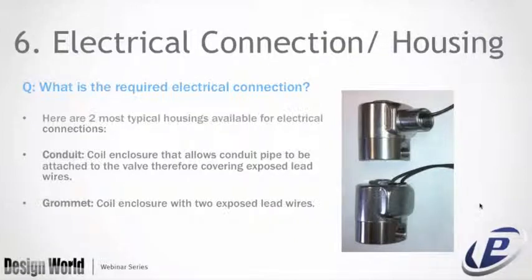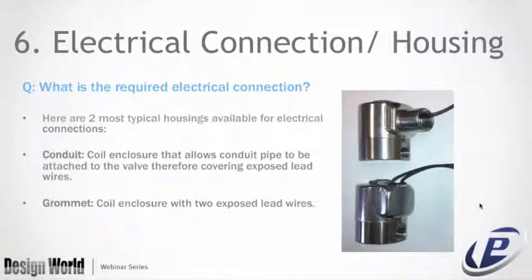Electrical connection — the housing: what is required for the electrical connection? The two most typical housings are: conduit, a coil enclosure that allows a conduit pipe to be attached to the valve covering exposed lead wire; and grommet, a coil enclosure with two exposed lead wires. Some industry standards also include DIN type, yoke with spade coil, strain relief, automotive, and splice box housings.